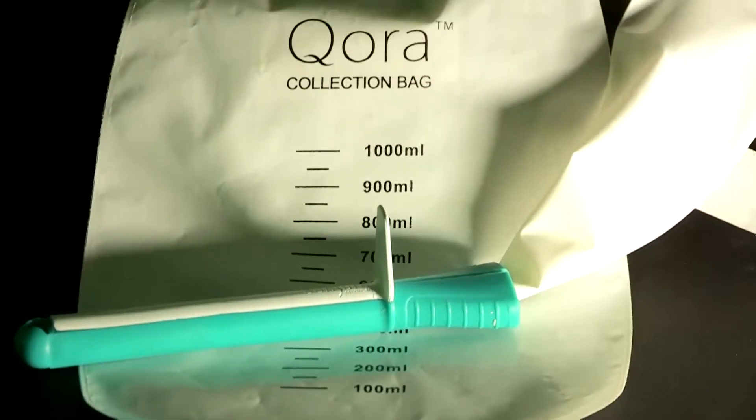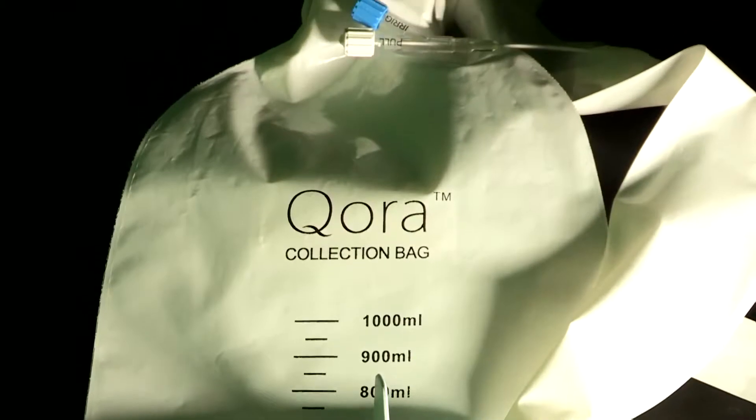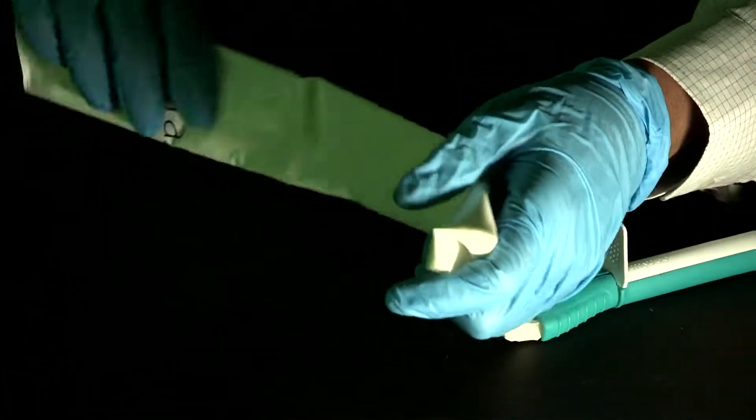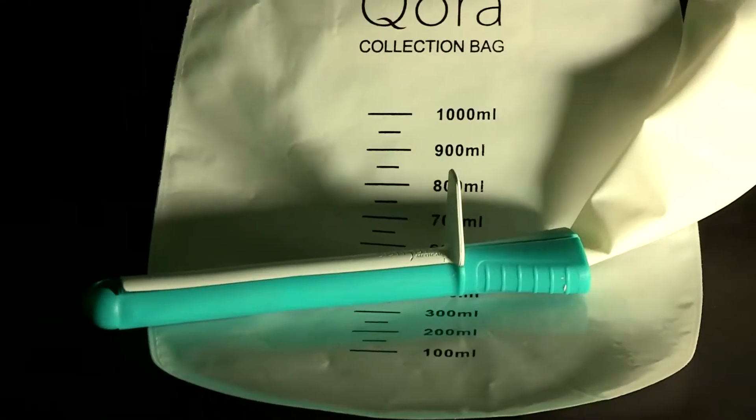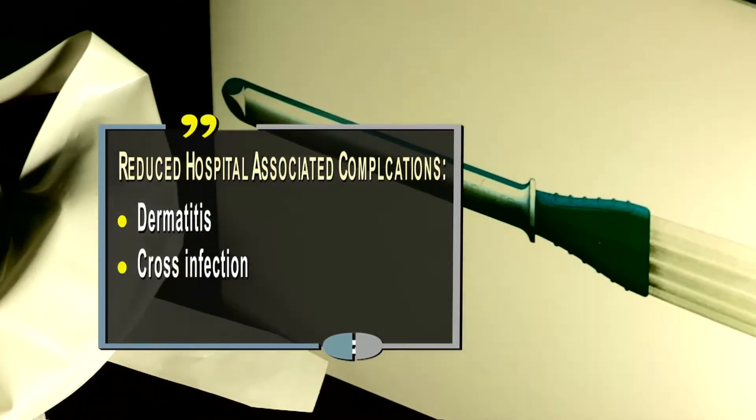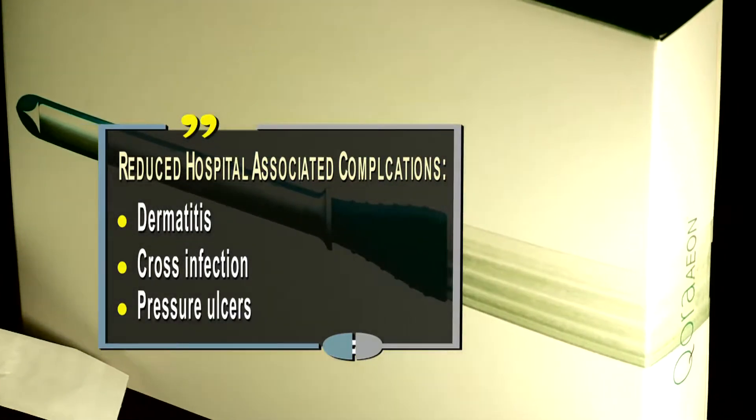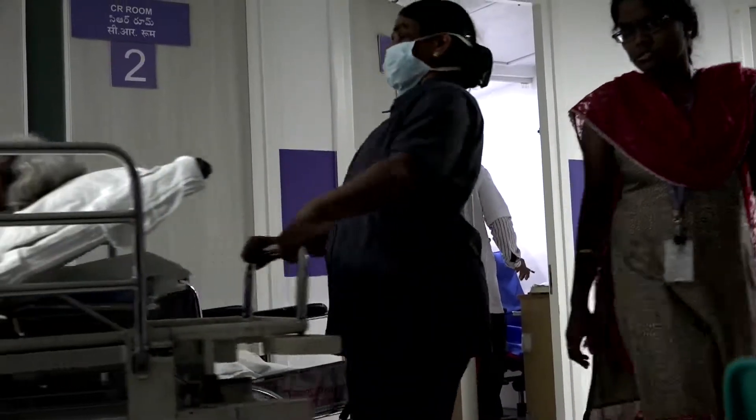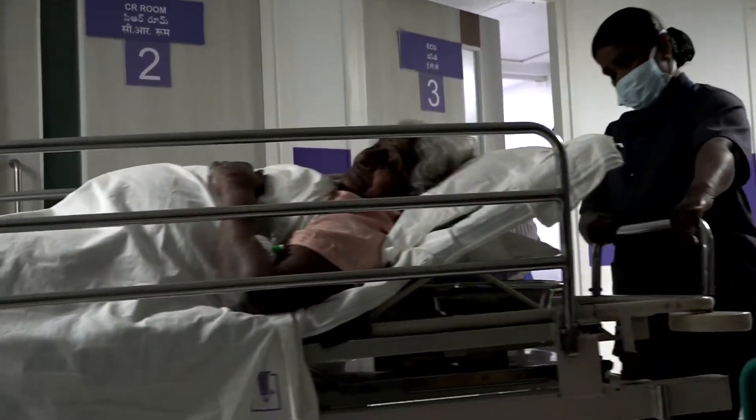Switching to Cora not only brings down the cost of consumables but also decreases net overall cost burden of fecal containment. The Cora suite of products are more cost effective and have been shown to reduce hospital associated complications like dermatitis, cross infection and pressure ulcers commonly associated with traditional fecal management through diapers and absorbent pads.